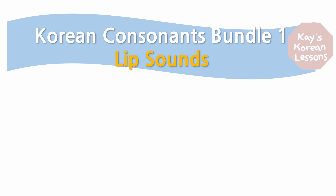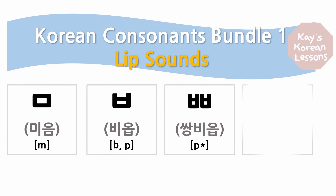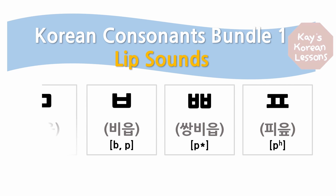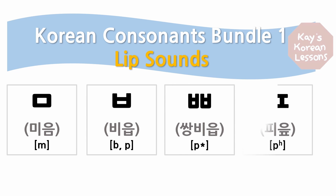The first bundle I'll walk you through today is 4 consonants that make lip sounds. They are ㅁ (미음), ㅂ (비읍), ㅃ (쌍비읍), and ㅍ (피읖).